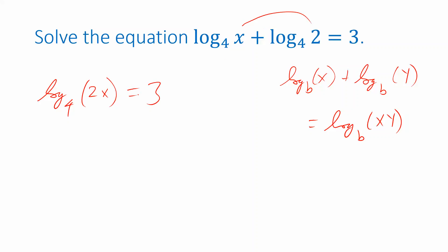How will we undo this logarithm, base 4? By exponentiating base 4. 4 raised to the log base 4 of 2x equals 4 raised to the 3. The 4 to the x and log base 4 of x are inverses. They cancel each other out, giving me 2x on the left side.